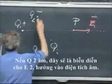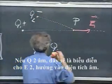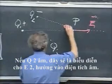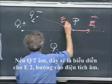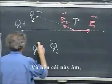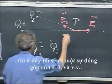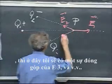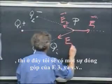If Q2 were negative this might be a representation for E2 pointing towards the negative charge. And if this one were negative then I would have here a contribution E3 and so on.